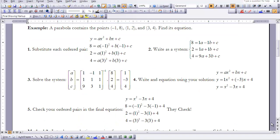So we're going to take a look at the parabola that contains the points negative 1, 8, 1, 2, and 3, 4. And so first thing we're going to do is substitute each ordered pair. So as you can see, I've taken negative 1 and inserted it in place of x, and I've taken 8 and inserted it in place of y. Done the same thing with the point 1, 2. My 1's in place of x and my 2 in place of y. And I did that for 3 in place of x and 4 in place of y for that next one.